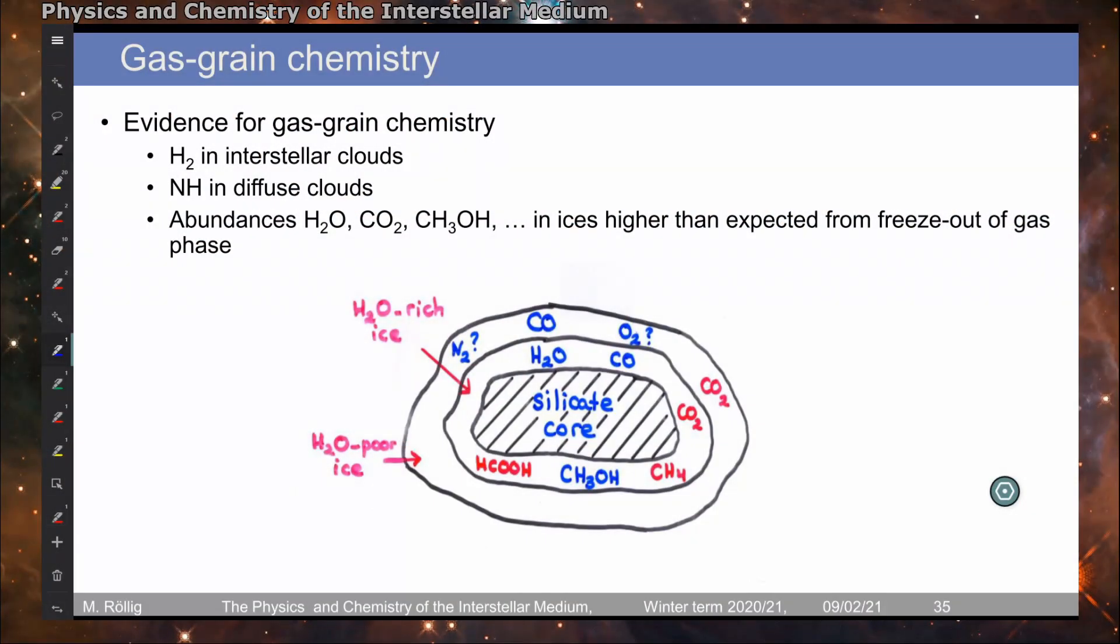Now a few words on gas-grain chemistry. We know that gas-grain chemistry is important. First of all, we already discussed that molecular hydrogen in interstellar clouds cannot efficiently form in the gas phase. We know that some other species, for example NH or NH3, that we observe can also only form efficiently on ice mantles or on grain surfaces. For example, also water, carbon dioxide, and so on.